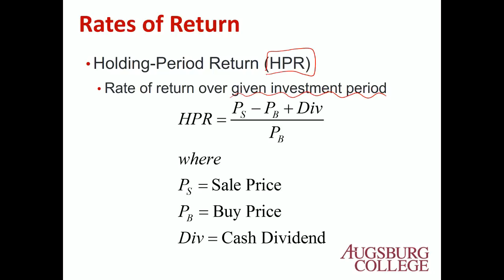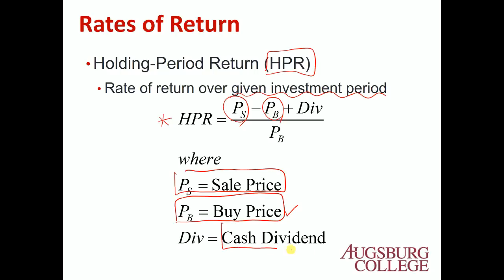It is the rate of return for your investment horizon. To compute this is quite simple. If you buy a stock at price PB (price of buy) and sell it at PS (sell price), and you receive a cash dividend during your investment horizon, your income has two parts: the dividend, and the price difference, which we call the capital gain.